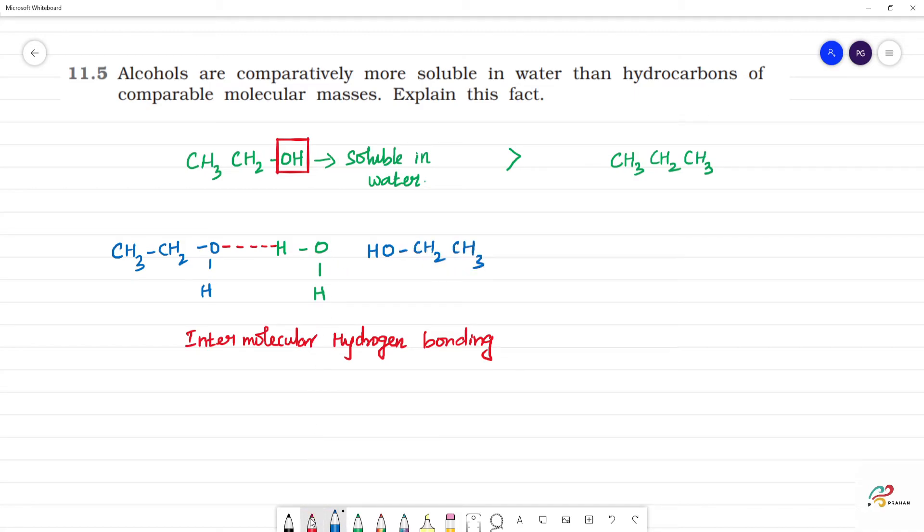This O and this H will form hydrogen bonding. It will continue. Here is O and H, then there is oxygen alcohol, oxygen water, hydrogen. If you look at this, it will continuously go on forming hydrogen bonding. So this alcohol will be dissolved in water.